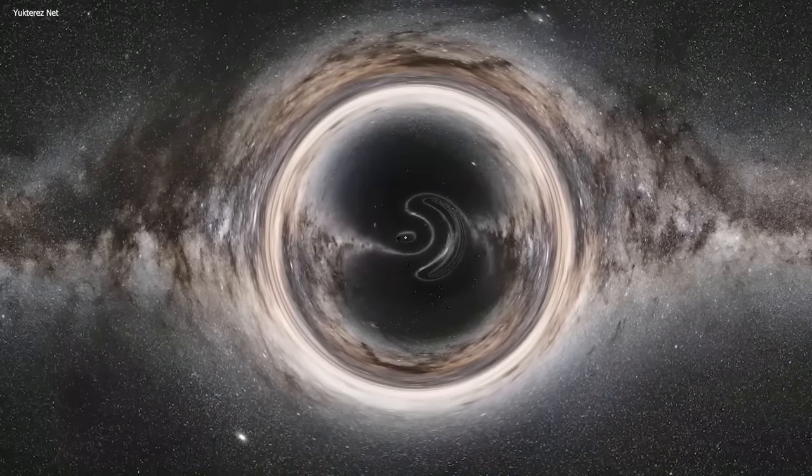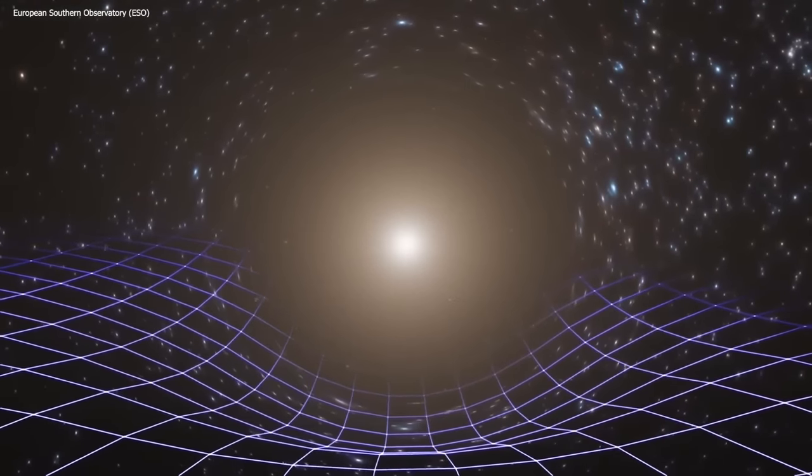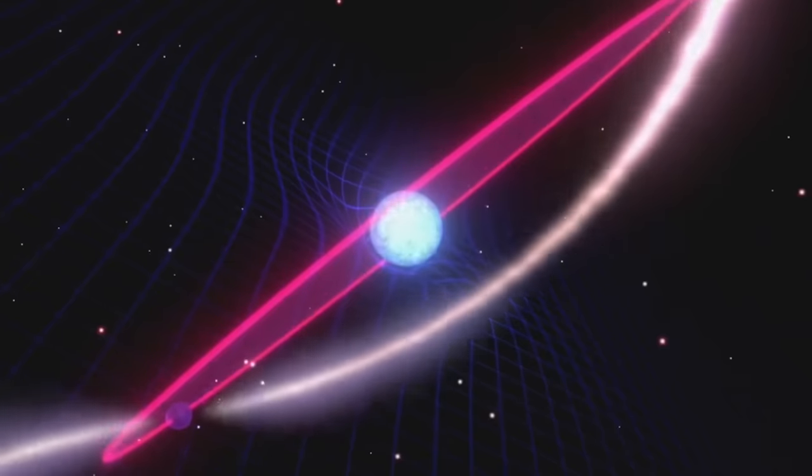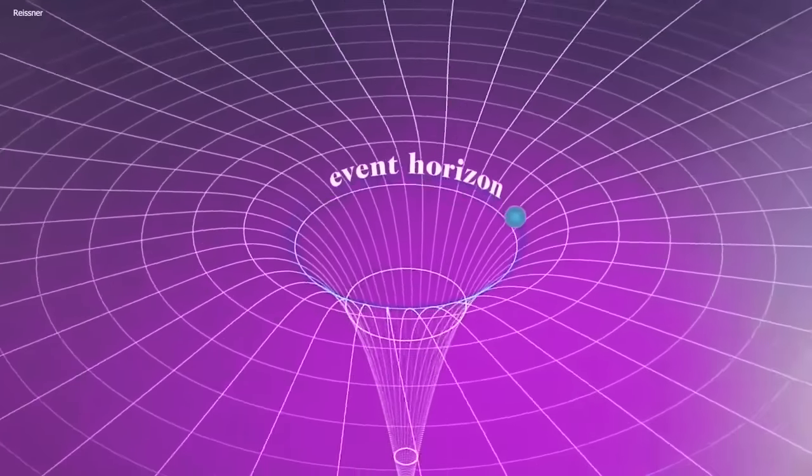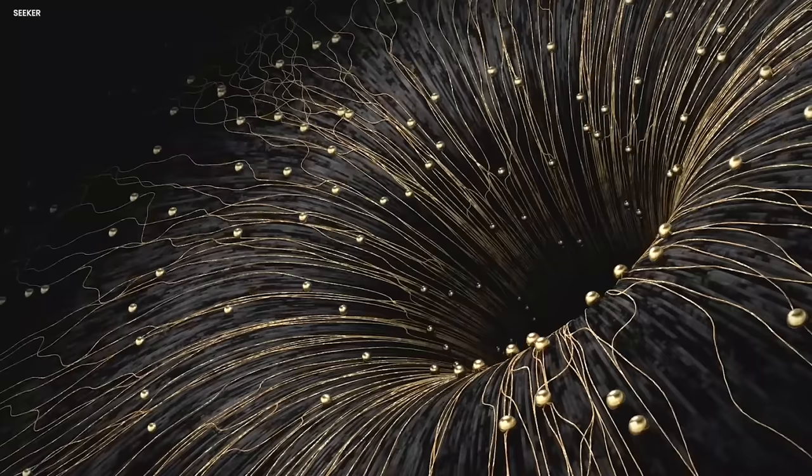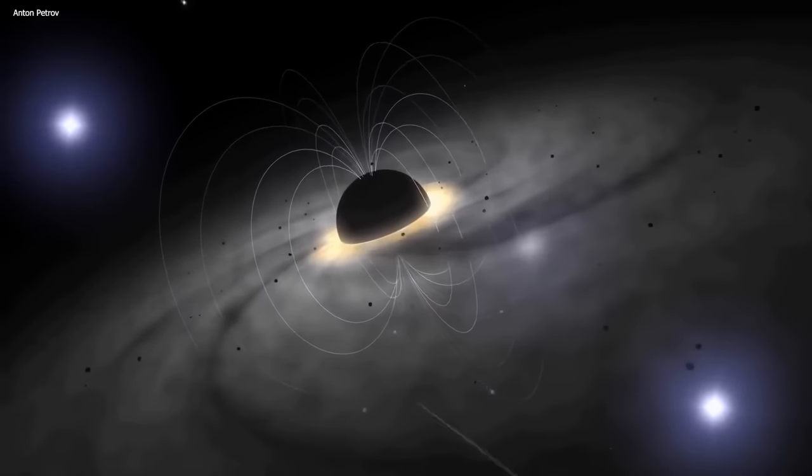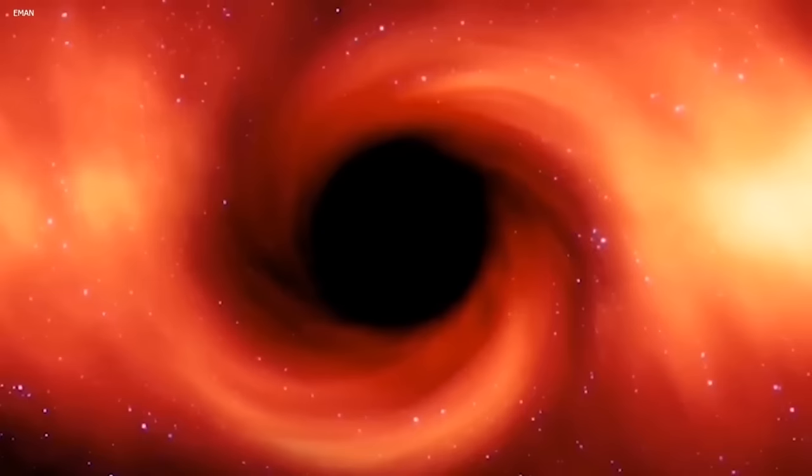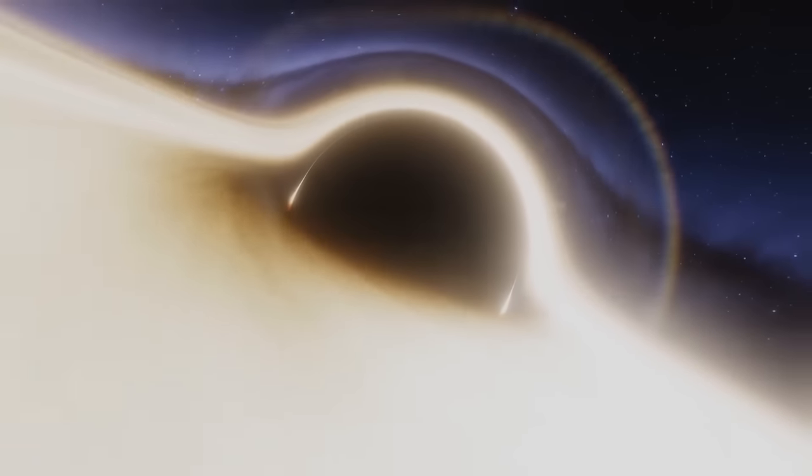In contrast, Kerr Newman black holes are characterized by both charge and rotation. They are described by the Kerr Newman solution in general relativity. The combination of electric charge and rotation introduces distinctive phenomena associated with these black holes. One notable effect is known as frame dragging, wherein the rotating black hole drags and twists the surrounding space-time. Kerr Newman black holes feature both an event horizon and an inner region called the Cauchy horizon. This inner boundary distinguishes the exterior region from the region housing the singularity. The properties of the Cauchy horizon are influenced by the black hole's charge and rotation, contributing to the intricate dynamics near the center of the black hole.